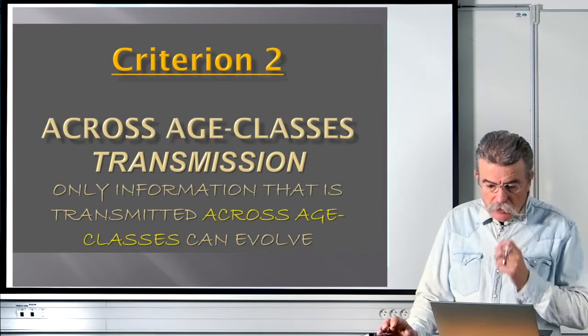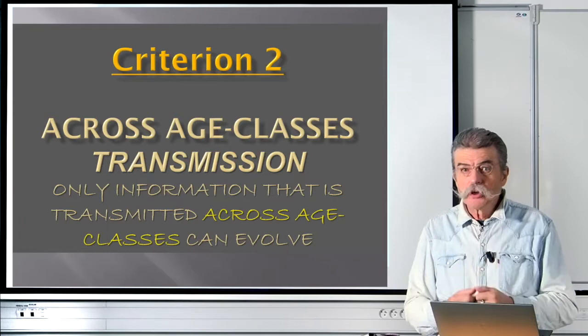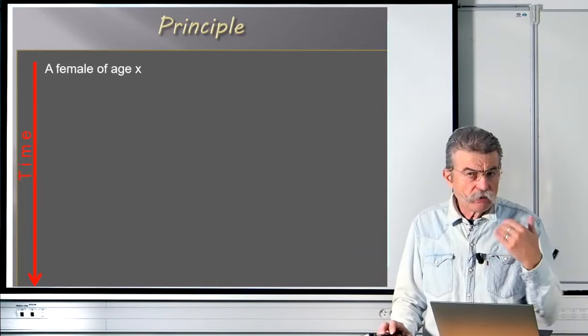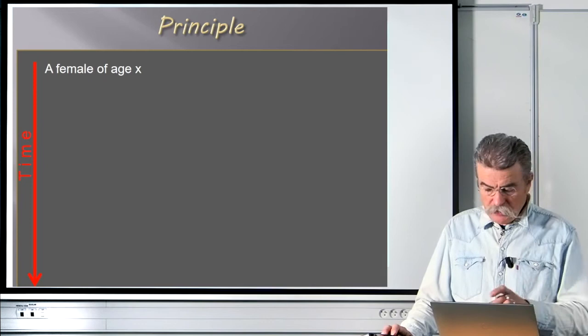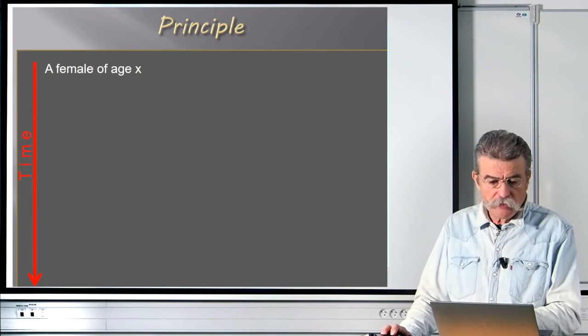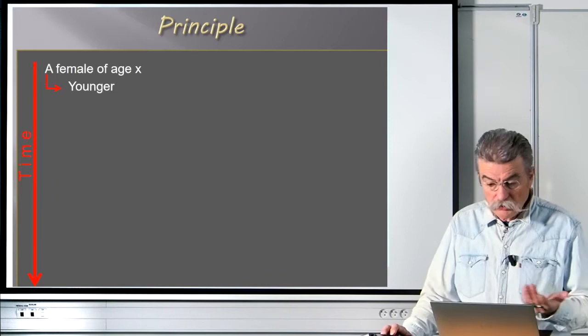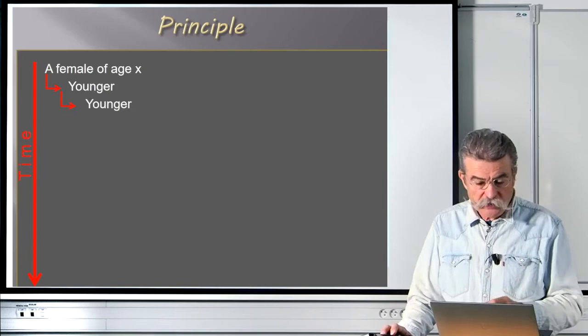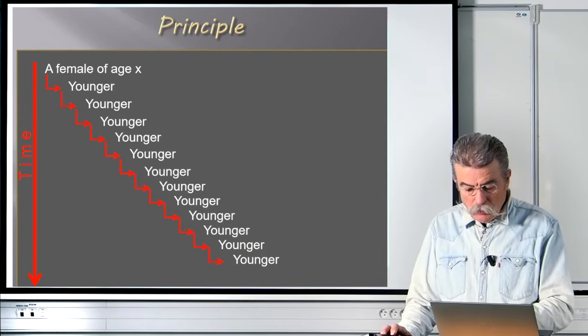The second criterion is that to persist in time, a preference should be transmitted from slightly older to slightly younger individuals — from old to young. Otherwise it would be purely horizontal and won't survive in time. Think of this as a transmission chain: a female of a given age couples with a male and is witnessed by a younger female, who makes her own choice based on what she socially learned, and is in turn witnessed by an even younger female, and so on across many transmission steps.